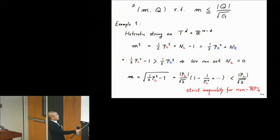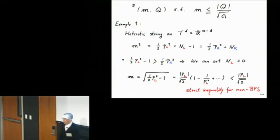How about the non-BPS state? Suppose the inequalities between the charges are in the opposite direction. In that case, we cannot set n_r equal to zero. But you can set n_left equal to zero. Since n_r is non-zero, this state violates supersymmetry. In this case, if you write n_r equal to zero, mass equals square root of half of p_left squared minus one. You see there is a minus sign here, which means that actually the mass is strictly less than charge. For non-BPS state, this inequality is actually strict. There is no equality here.